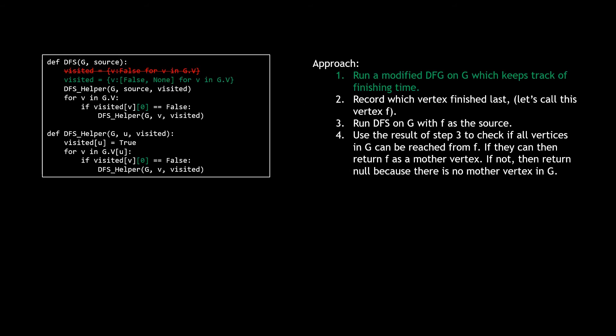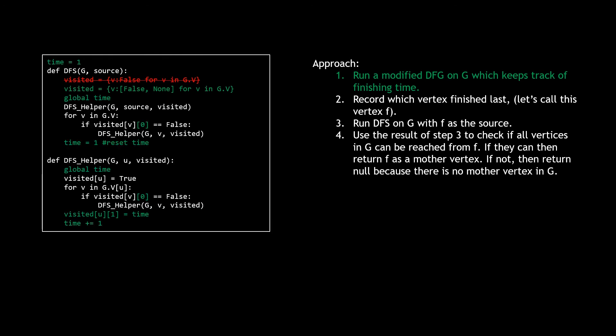Let's jump into the coded solution. We modify DFS so the visited dictionary holds not just a boolean but also a finishing time timestamp, initially null. We also add a global time variable shared between the DFS and DFS helper functions. Whenever a vertex is finished, we store the finishing time in the visited dictionary and increment the global time variable.